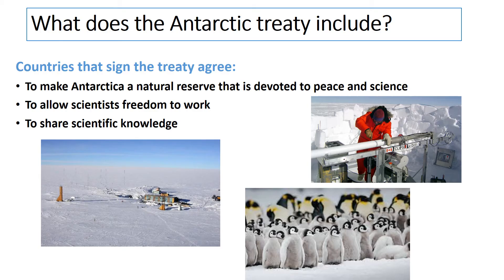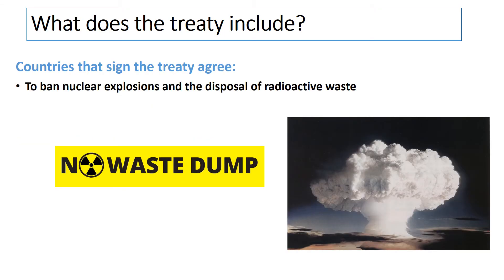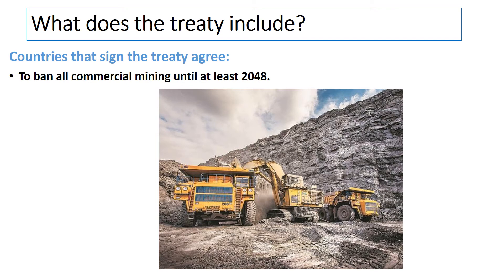It also involves wildlife science as we try to understand our effect on different ecosystems such as penguins. The treaty includes a rule that we should set aside any territorial claims, preventing a potential war as countries claim land or a race to claim resources such as oil. Nuclear testing is banned and no one is allowed to dispose of radioactive waste there. There's also an agreement to ban all commercial mining until at least 2048, protecting Antarctica from large machinery digging big holes in the ground.